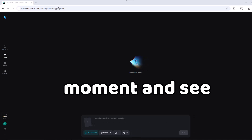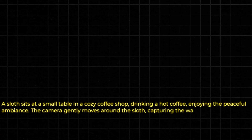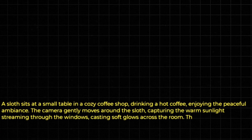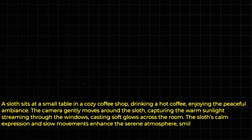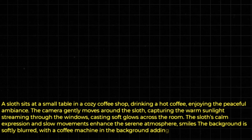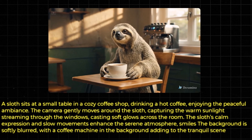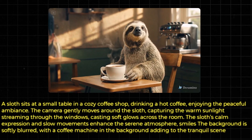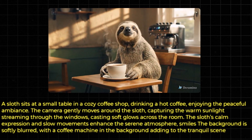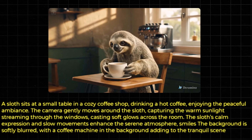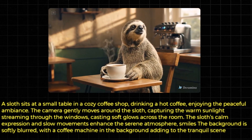Now for the big reveal — let's look at some of the completed videos. The first prompt was a text-to-video: a sloth sitting at a small table in a cozy coffee shop, drinking a hot coffee, enjoying the peaceful ambiance, with the camera moving gently around the sloth, capturing warm sunlight through the windows. The sloth has a calm expression and slow movements, and then smiles at the camera. The video is only five seconds long and it's being looped. Overall, not too bad — the sloth looks realistic, the motion is pretty smooth, and the steam coming off the coffee is pretty good.